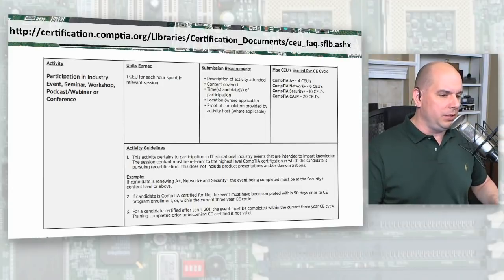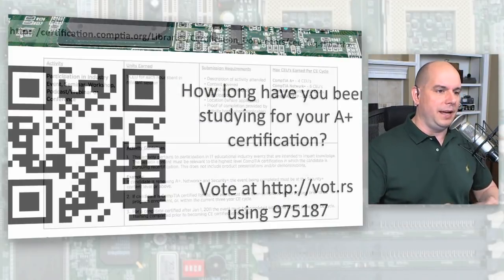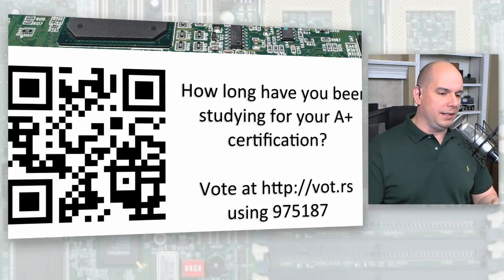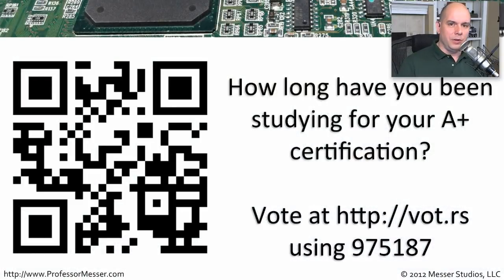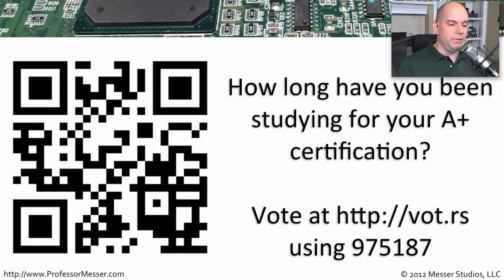Today I'm going to have some interactive sessions. I have a question that asks how long have you been studying for your A Plus certification. I've got a QR code on the screen. You're able to take a QR code reader from your machine and bring that up. You've also got a number — you can just go to vote.rs, V-O-T dot R-S, and use the number 975187. I need to go to that very page myself and see what is there.